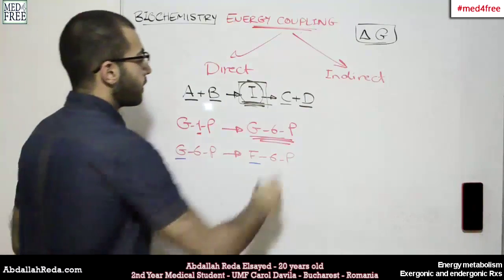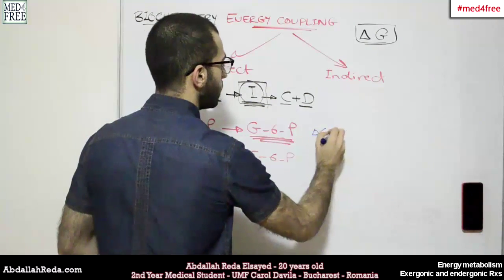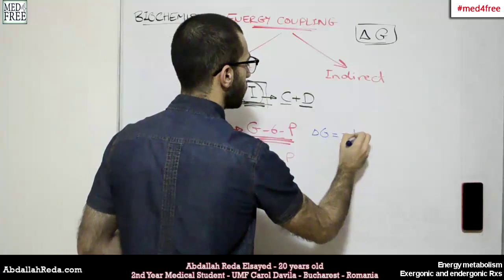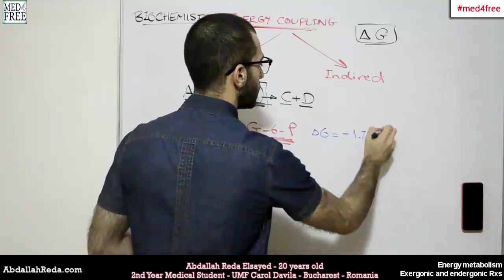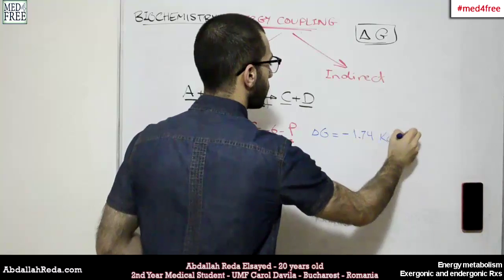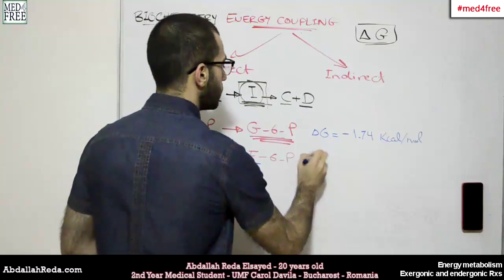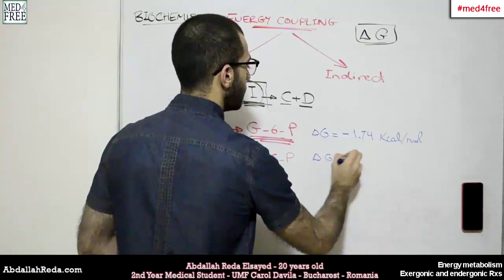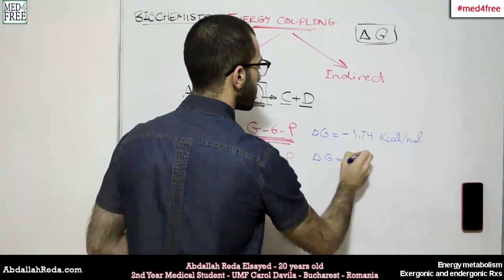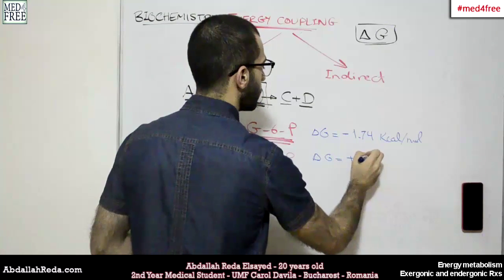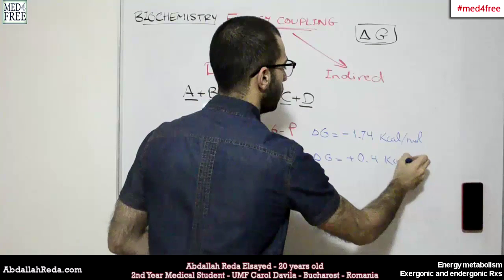Now the delta G for that reaction is minus 1.74 kilocalories per mole. And the delta G for the other reaction is positive or plus 0.4 kilocalories per mole.